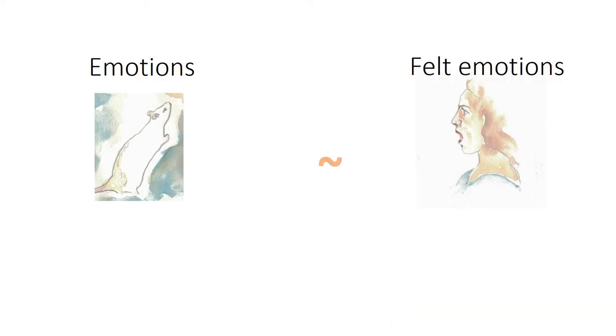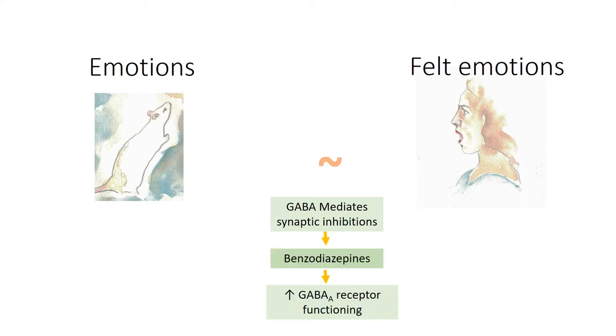As I presented in previous slides, we can use evidence on drug treatments to make inferences about specific feelings of emotions in animals. In mammals, the GABA neurotransmitter mediates synaptic inhibitions. Benzodiazepine drugs increase GABA receptor functioning, reduces anxiety-like behaviors in rats in commonly used tests for anxiety, and reduces feelings of anxiety in humans.